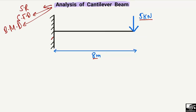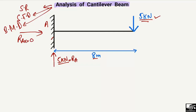When there is a concentrated load like 5 kilonewton here, it will be directly transferred to the fixed support, because a fixed support can take vertical load, horizontal load, and also moment. There is no other support, so the whole 5 kilonewton will be transferred to this support. So R_A (vertical) equals 5 kilonewton, and R_Ax (horizontal) equals zero because there is no horizontal load acting on the beam.